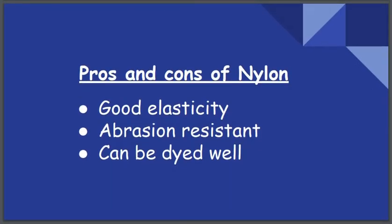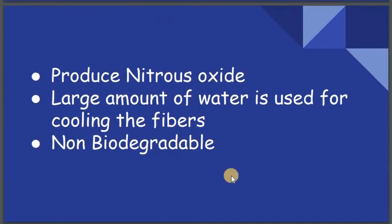Nylon has around 33% elasticity. It is abrasion resistant, meaning it will not wear out easily when constantly scratched. These fabrics can also be easily dyed in any color. However, nylon produces large amounts of nitrous oxide, which is very important in the formation of acid rain.